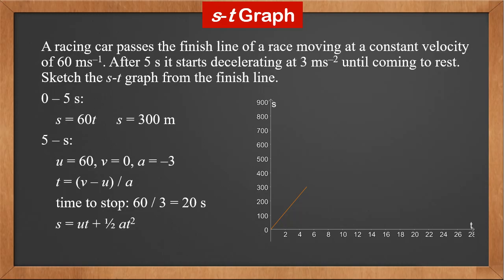For displacement, we use the formula S equals U·T plus half A·T squared. We need to be careful: this S is the displacement since the 5th second, so we add the first 300 meters, and the time is elapsed since the 5th second, so we use T minus 5. Therefore, the expression for S after the 5th second is 300 plus 60(T minus 5) minus 1.5(T minus 5) squared. This is a quadratic expression, so the curve is a parabola. We sketch it to the 25th second when the car stops.